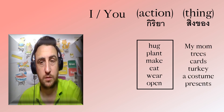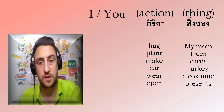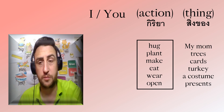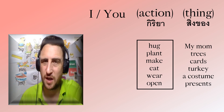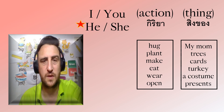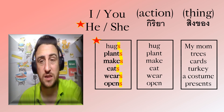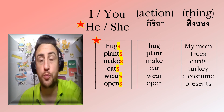Remember: eat, wear, open, hug my mum, plant trees, make cards, eat turkey, wear a costume, open presents. I hug my mum. I plant trees. I make cards. You eat turkey. You wear a costume. You open presents. And for he and she, the action has S: he hugs his mum, she plants trees, she eats turkey, he wears a costume, she opens presents.